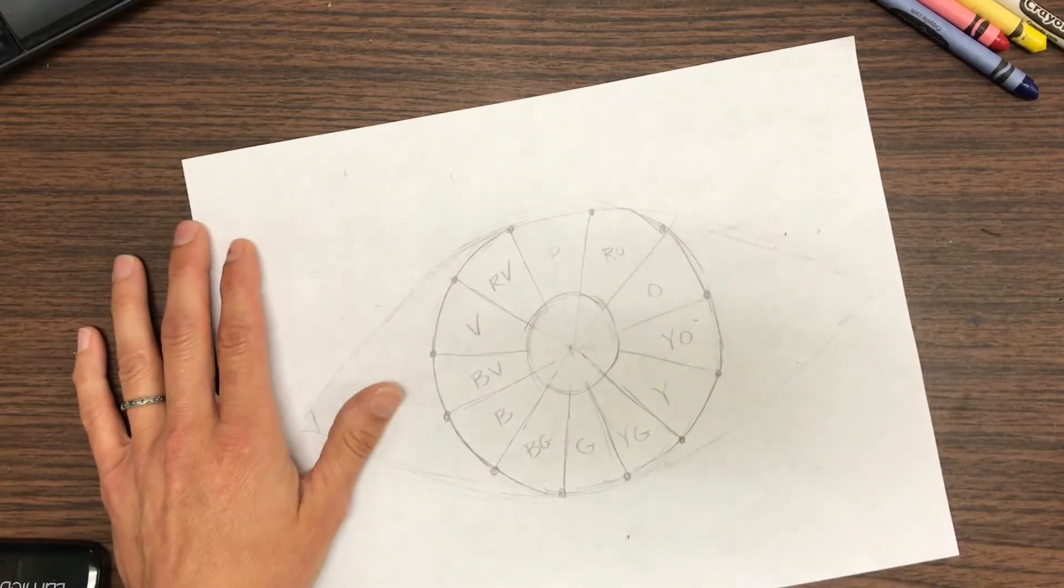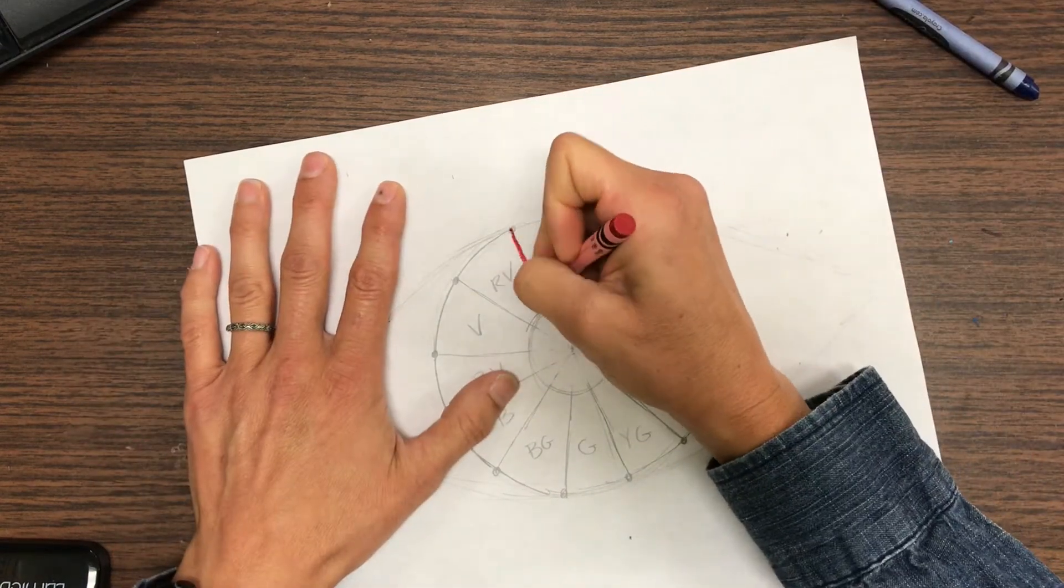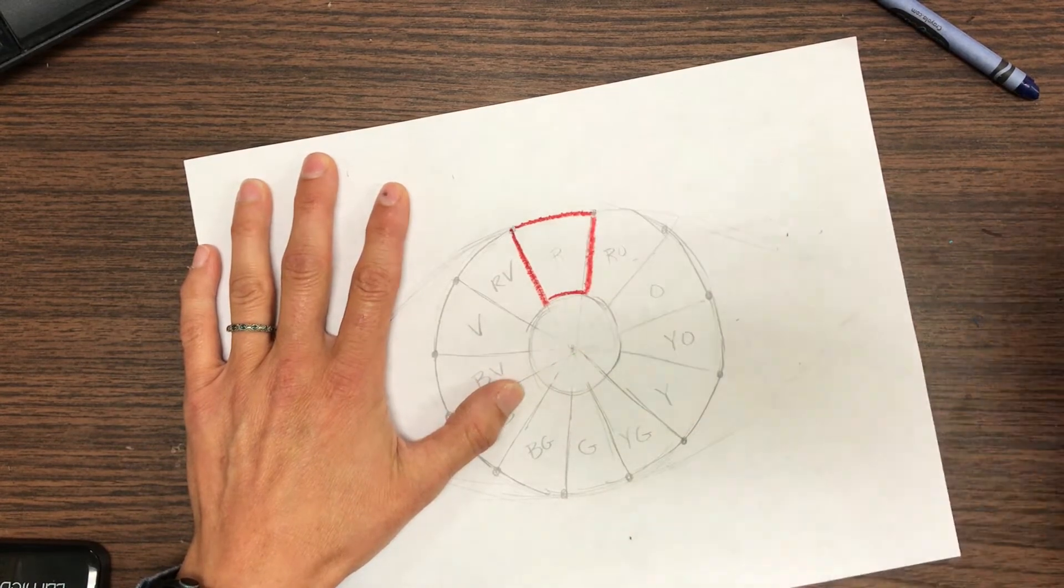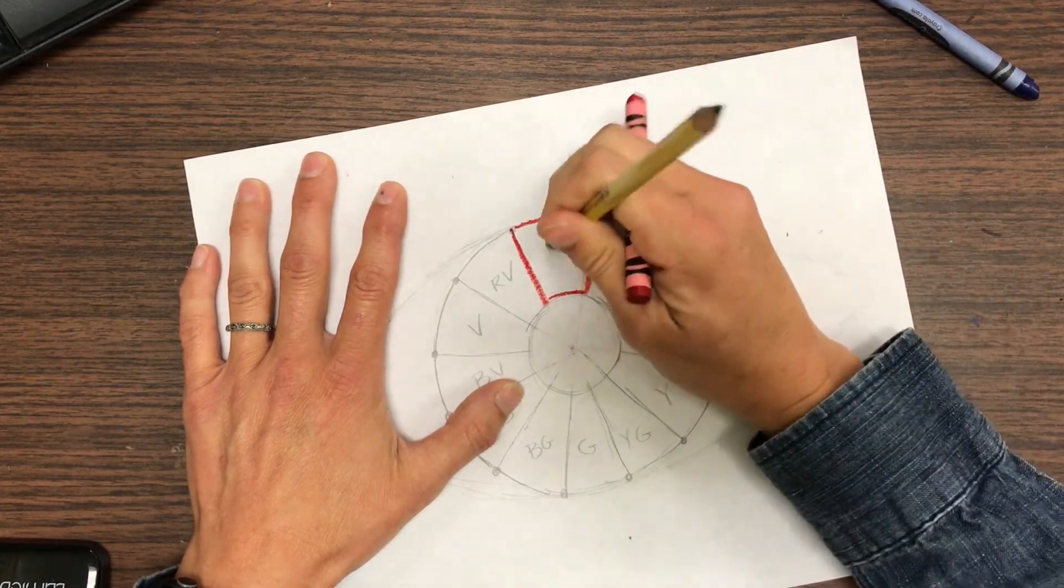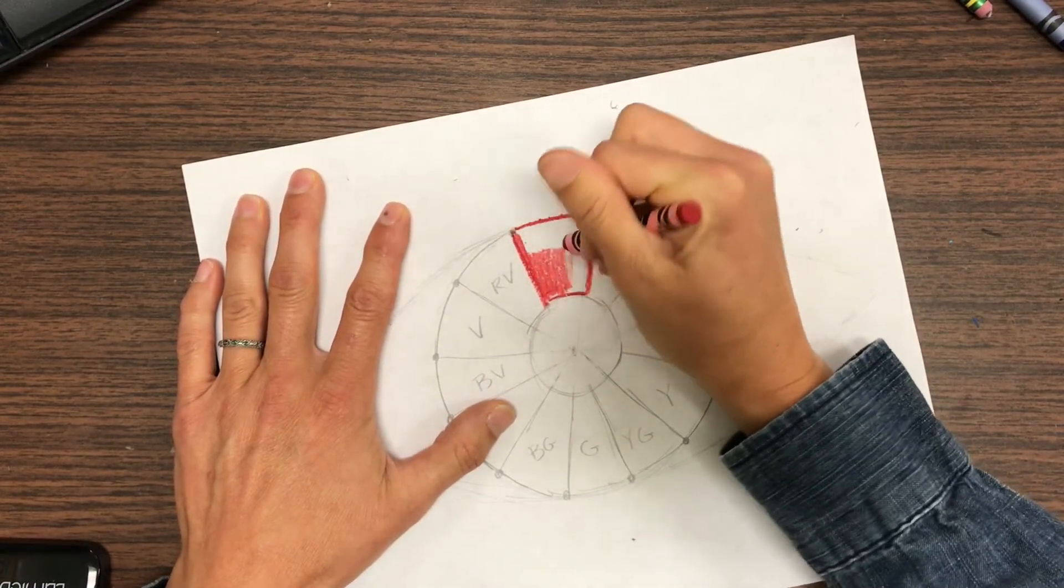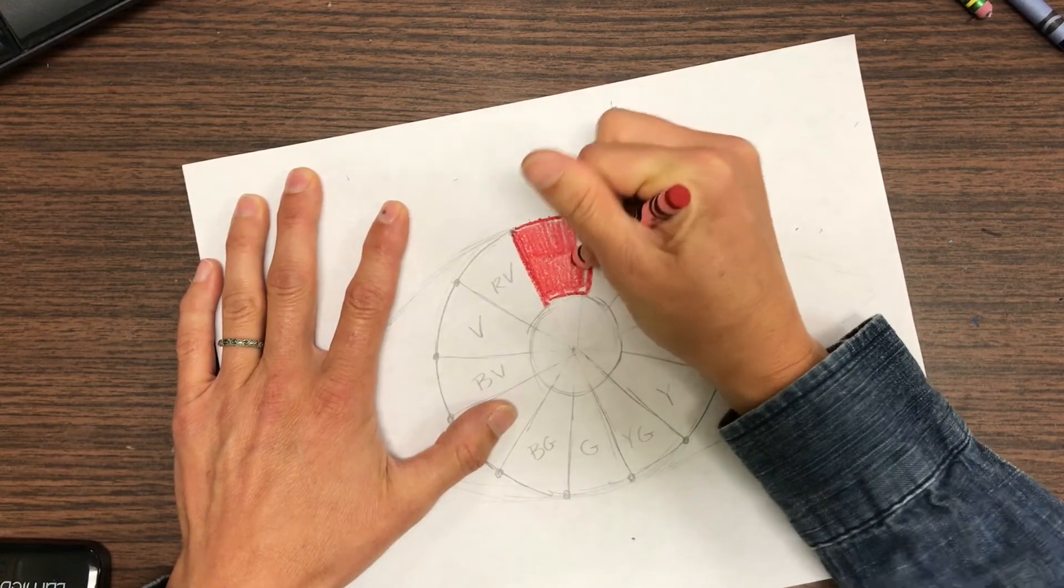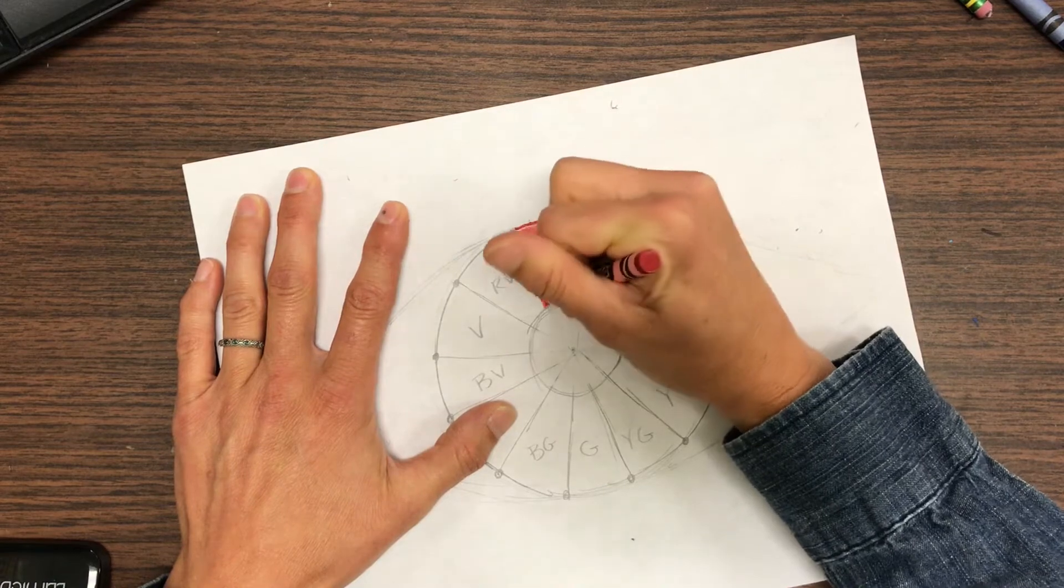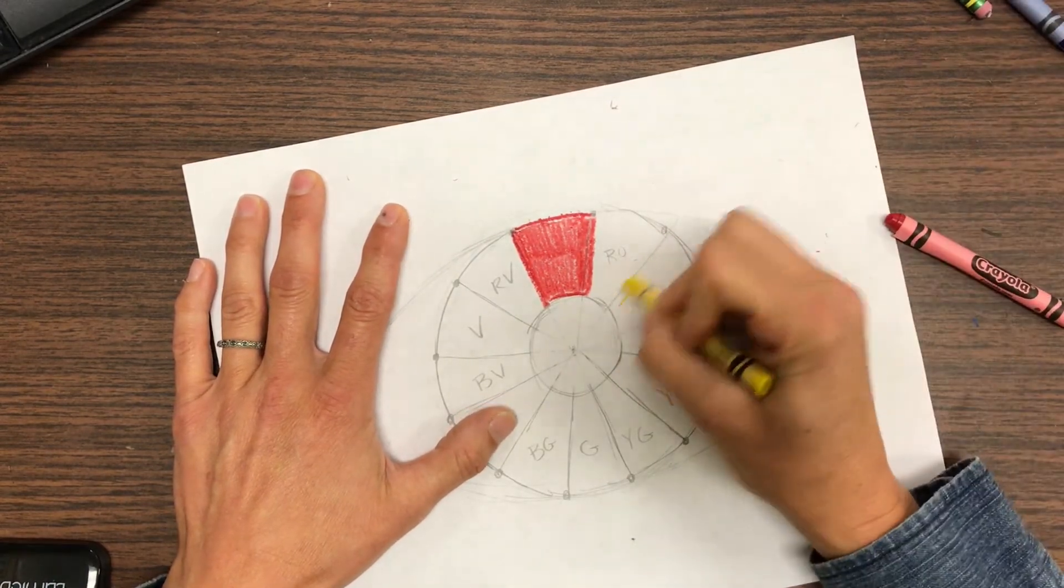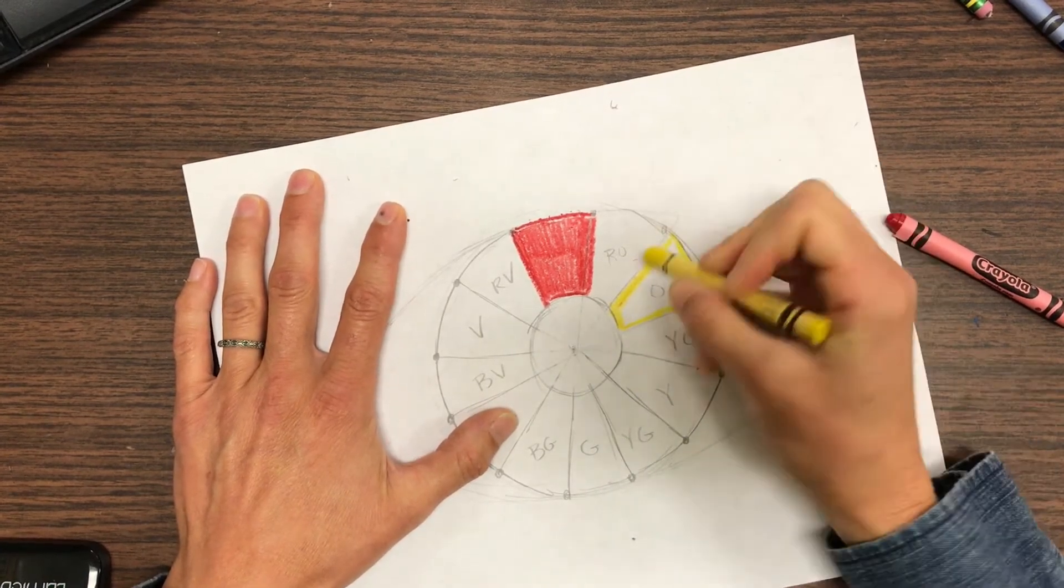Now I can start coloring. I'll start with the red. This one's gonna be red. If you want to erase that R right before you color just in case you can see it, you can do that. Now when I'm making red orange, it's gonna be a little bit darker than the orange, a little bit more red. I'm gonna put some yellow on my orange first.